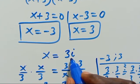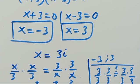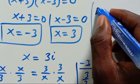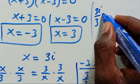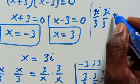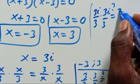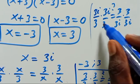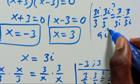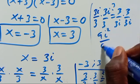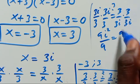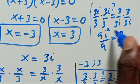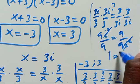Even if we check the complex solution X equals 3i: 3i divided by 3 times 3i divided by 3 equals 3 divided by 3i times 3 divided by 3i. On the left side, 3 times 3 is 9 and i times i is i squared. On the right side, 3 times 3 is also 9 and i times i is also i squared. This gives 9i squared divided by 9i squared, which equals 1 on both sides — so the complex solution is also satisfied.